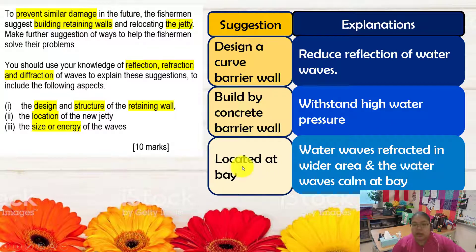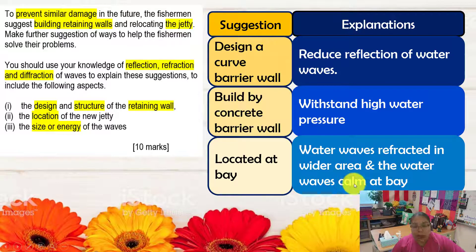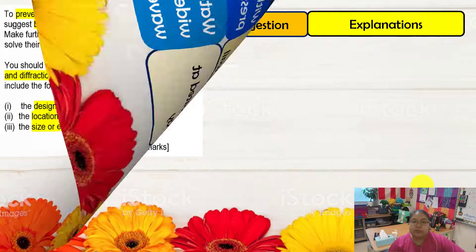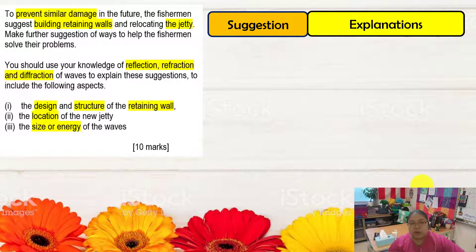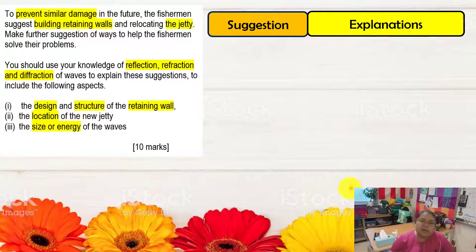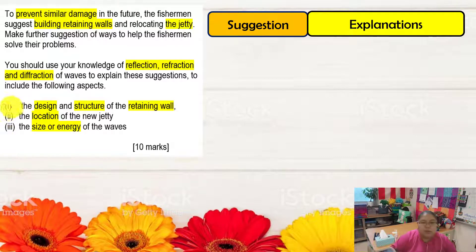When the jetty is located at the bay, the water wave refracts over a wider area, so the energy spreads out and is reduced — compared to concentrating at a gap. That gives 6 marks. We still need 4 more, so we continue with size and energy, which involves diffraction. Diffraction involves a retaining wall with an opening.